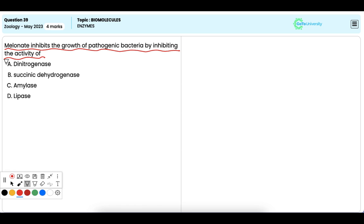Option A: Dinitrogenase. It is incorrect. It is an enzyme involved in nitrogen fixation and is not directly inhibited by melanin or malonate.